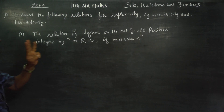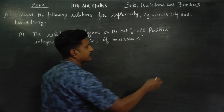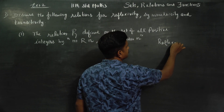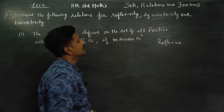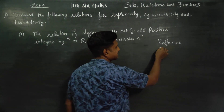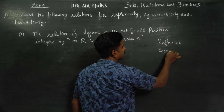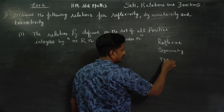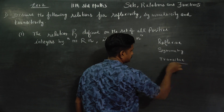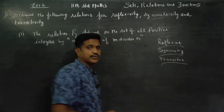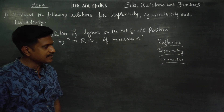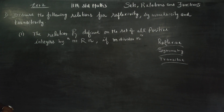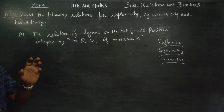We are going to check three relations: reflexive, symmetric, and transitive. These are beautiful relations. How do you check relations? Relations are related.